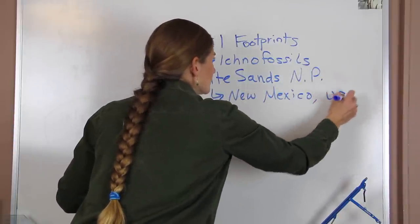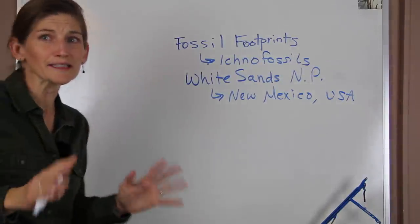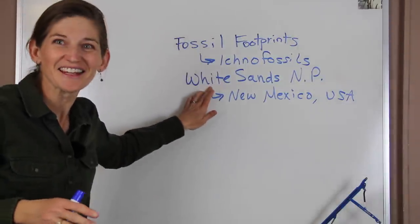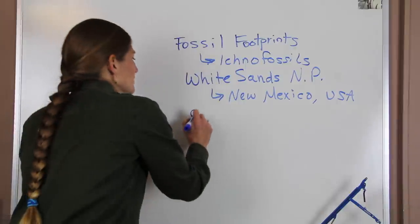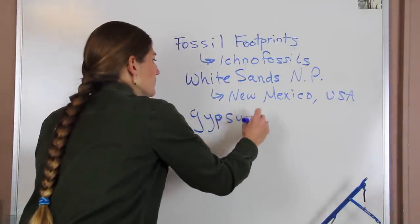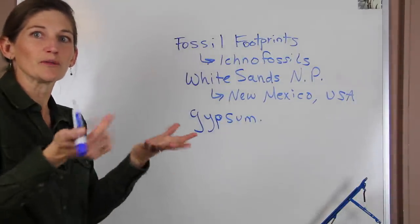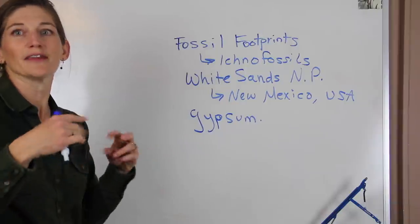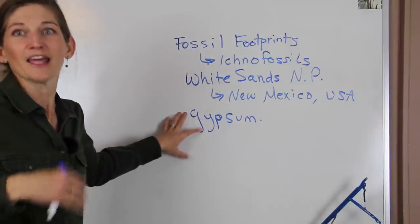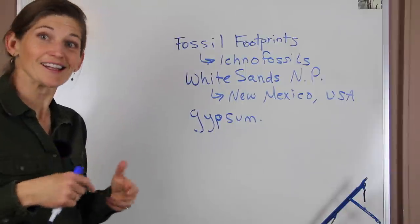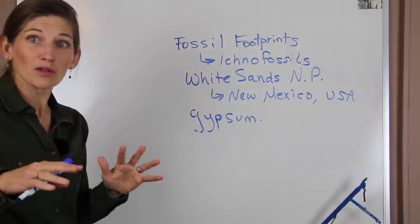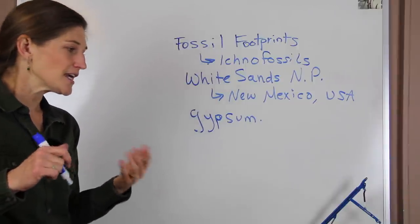White Sands is a really cool place where we have big white sand dunes, hence the name. The sand here is made out of gypsum, an evaporite mineral. It forms when we have water that's enriched with calcium and sulfate, and as the water evaporates it leaves behind the gypsum. The gypsum was then weathered and turned into the sand that makes up the dunes there today.